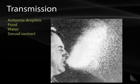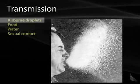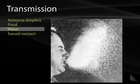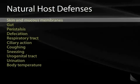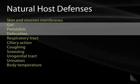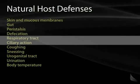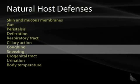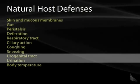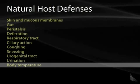Transmission of bacteria can come in a number of different ways. They can ride along in airborne droplets, we can ingest them in our food or water, or we can get them through sexual contact. We have evolved a series of natural host defenses which protect us from infection. These include our skin and mucous membranes as a physical barrier, gut peristalsis and defecation, ciliary action in the respiratory tract, coughing and sneezing, urination in the urogenital tract, and body temperature which inhibits bacterial growth.